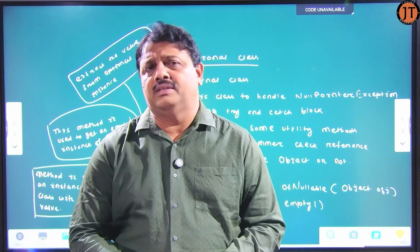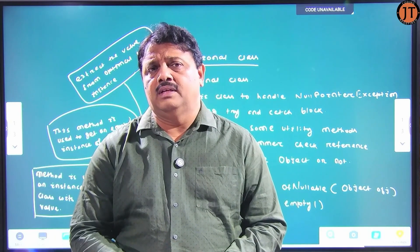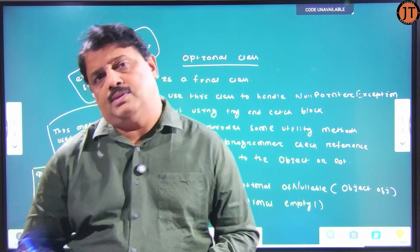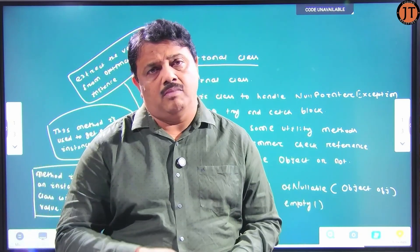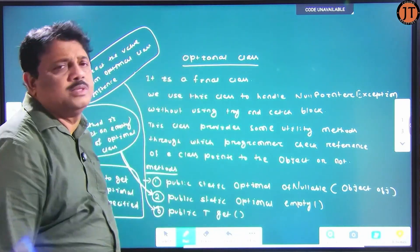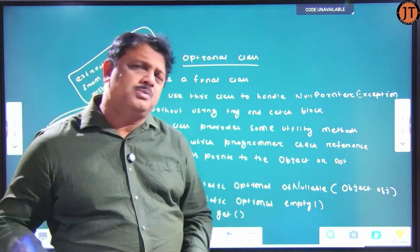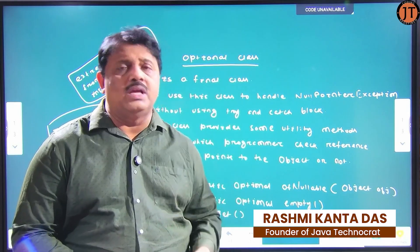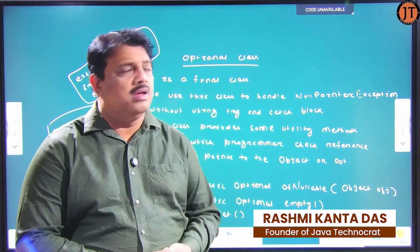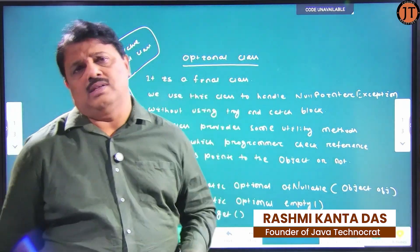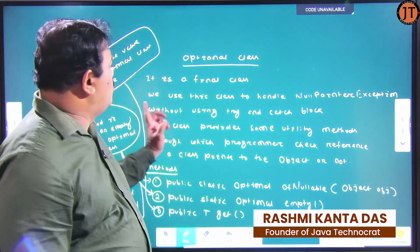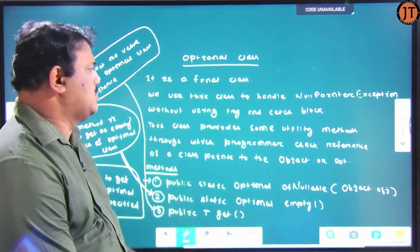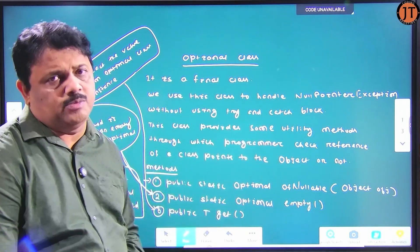Java introduced a new class to address this — it is called the Optional class. Optional is a predefined final class present in the java.util package. We use this class to handle NullPointerException without using try-and-catch block.